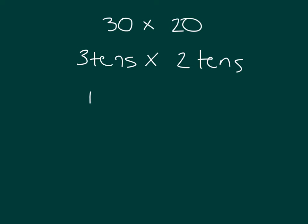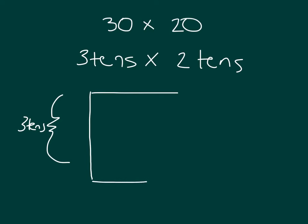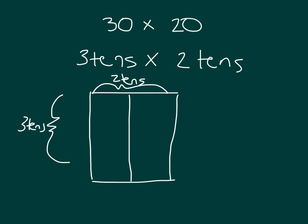So we will go ahead and model that. We'll show three tens, and then here we'll show two tens with an area model. One ten, two tens, three tens — three tens multiplied by two tens. The vertical side here is partitioned into three tens, and the horizontal side is partitioned into two tens.